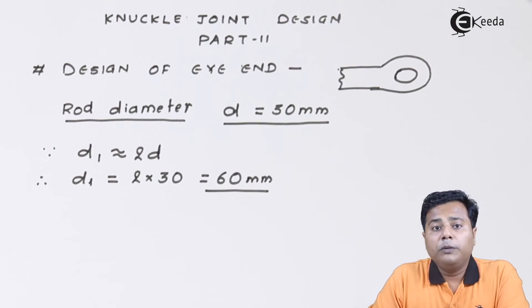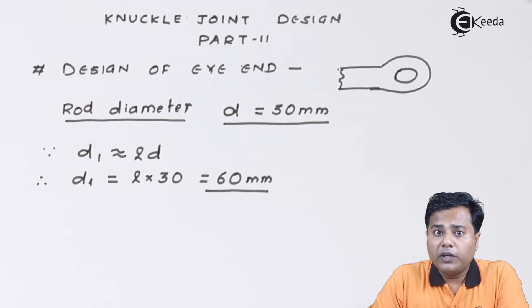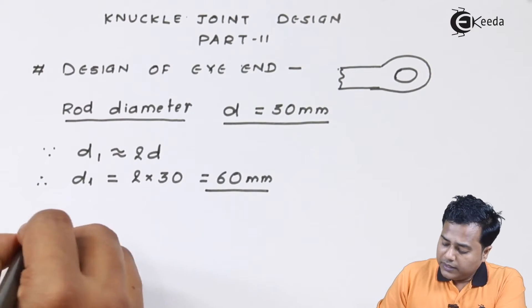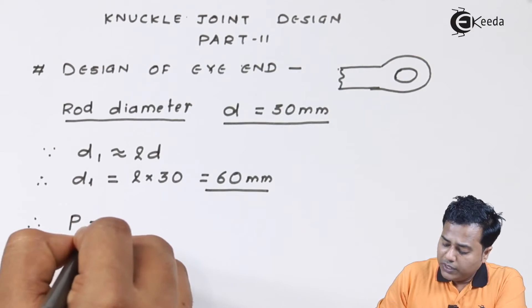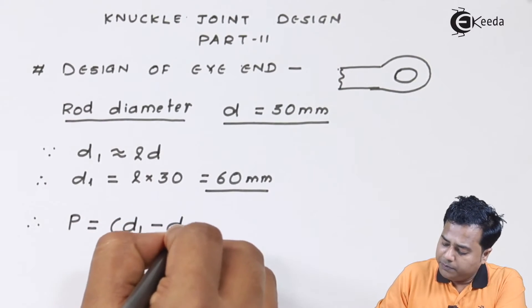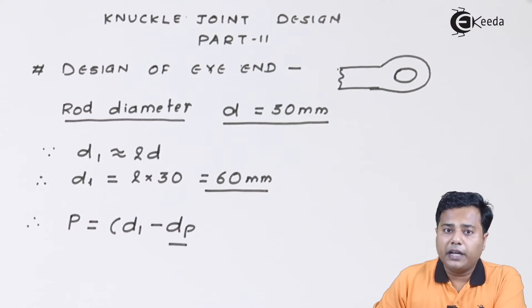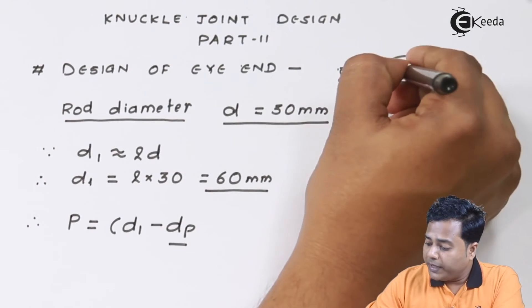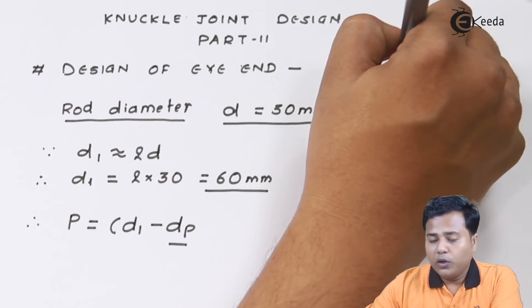Now the projected area must be the larger diameter minus smaller diameter into the length. The formula is: axial load is equal to (d₁ minus dp), where dp is the pin diameter, the pin which is going to be inserted through this particular hole.